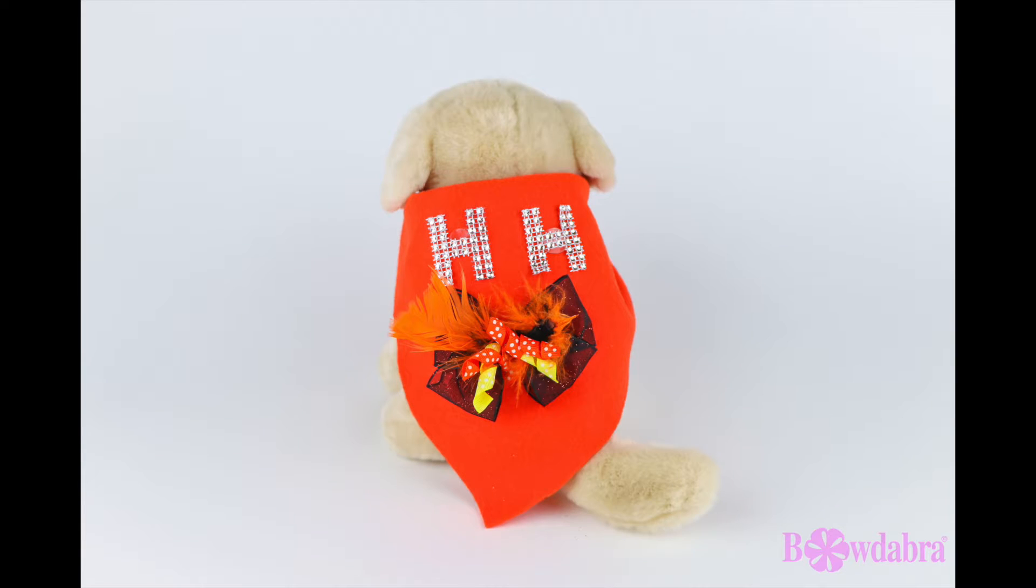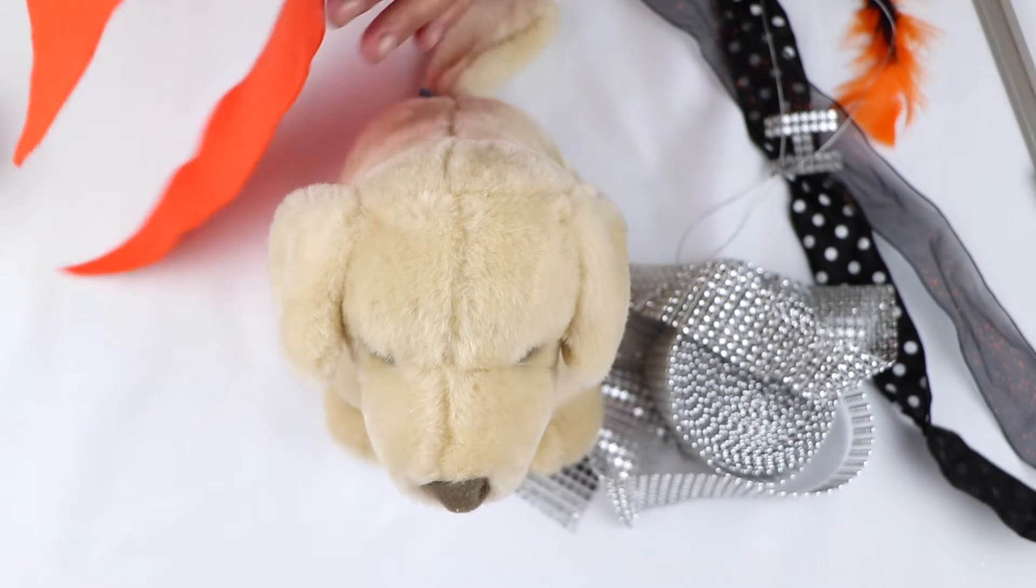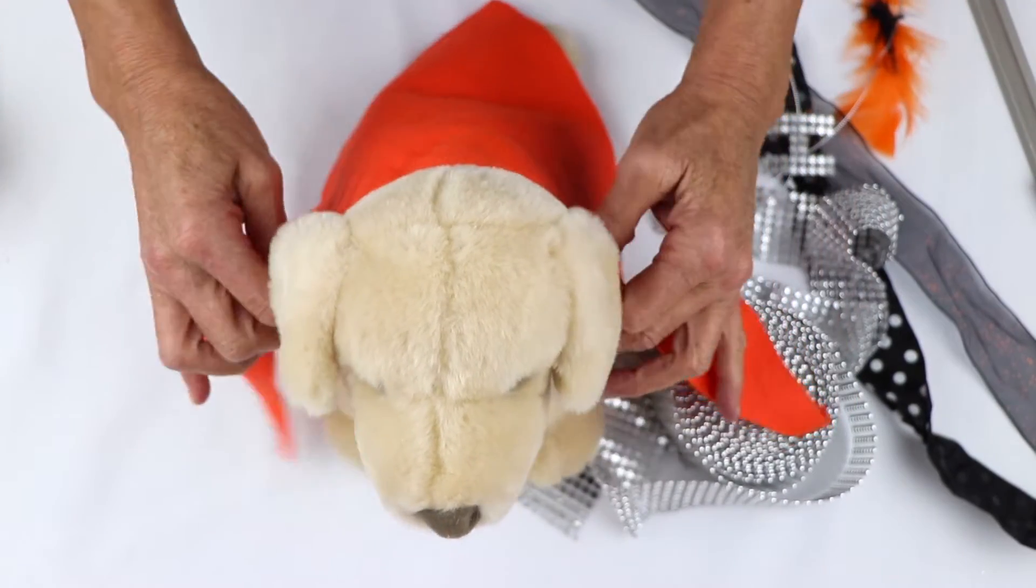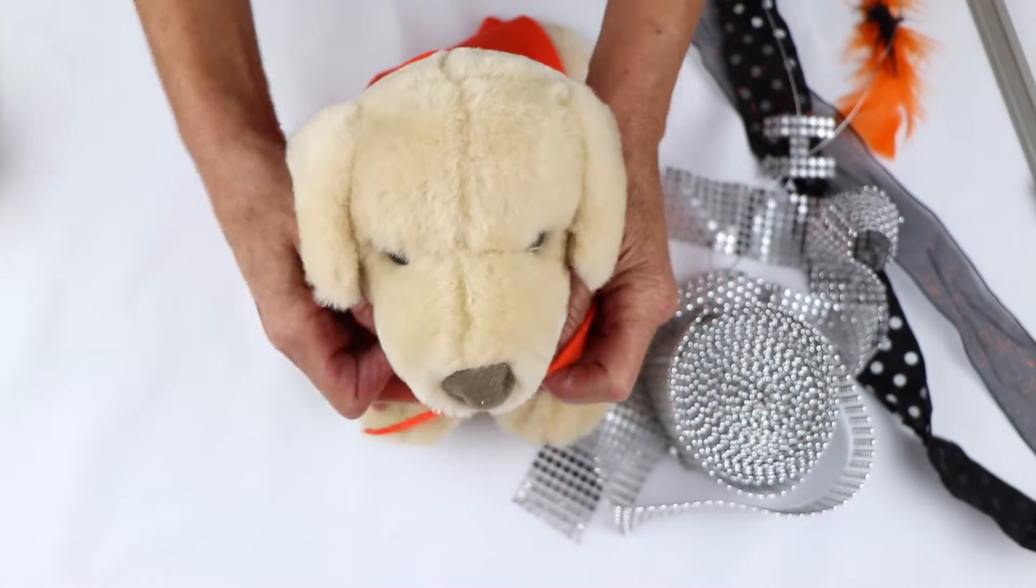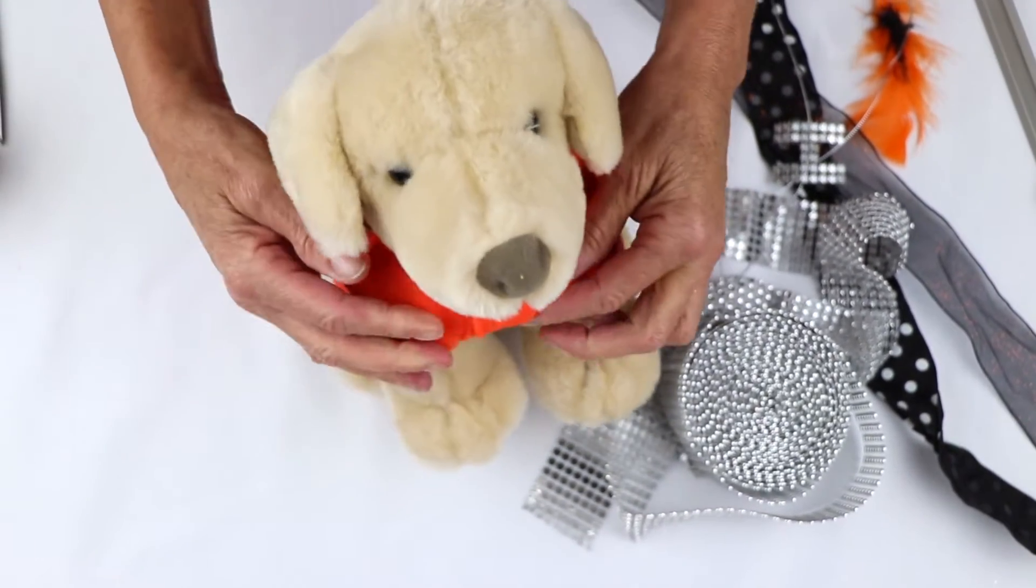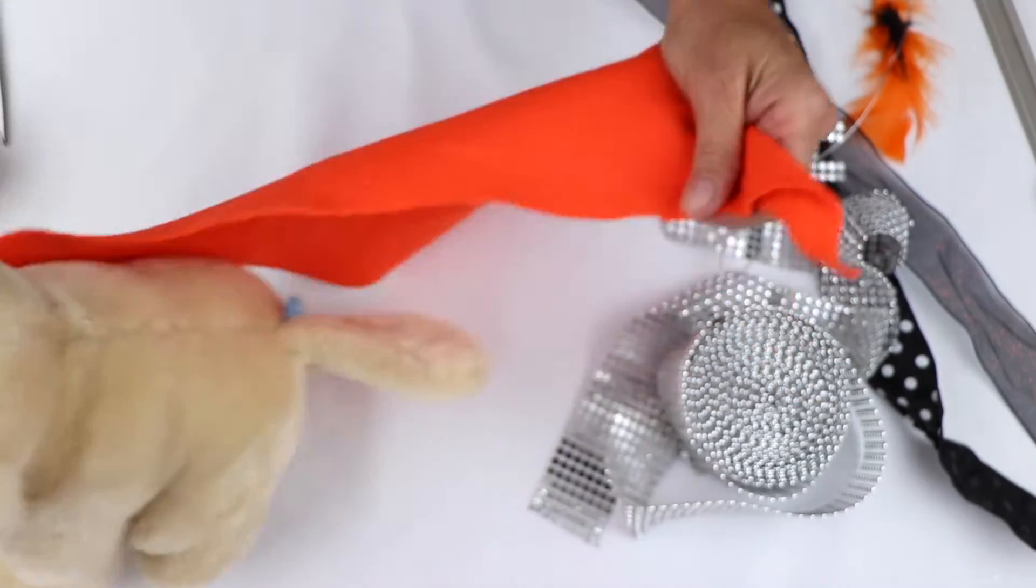Now we're going to make this really cute puppy costume. So I'm going to start with a piece of fabric or felt. I'm using orange felt here. And what I want to do is wrap it around to make it the right size for my puppy in order to tie it off. And then I'm going to cut my triangle.